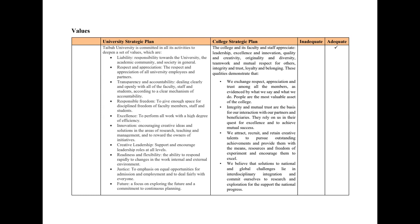Here we have multiple values for the university: liability, transparency and accountability, responsible freedom, excellence, innovation, creative leadership, readiness and flexibility, justice, and future. All colleges must provide their own values mapped with these university values. You can use the same values but be more specific in defining yours. For example, transparency and accountability is defined as: 'dealing clearly and openly with all faculty, staff, and students according to a clear mechanism of accountability.'